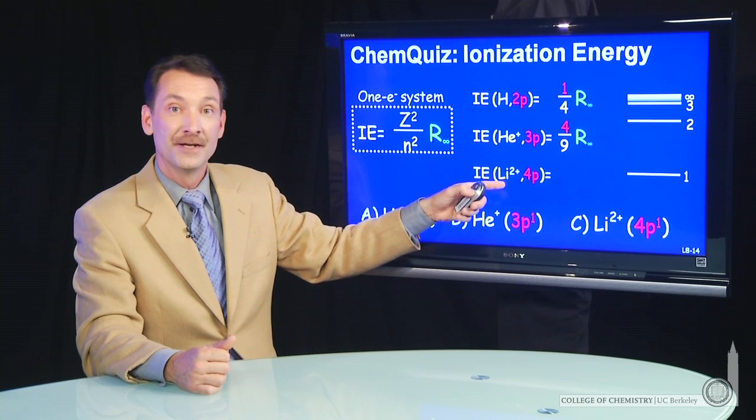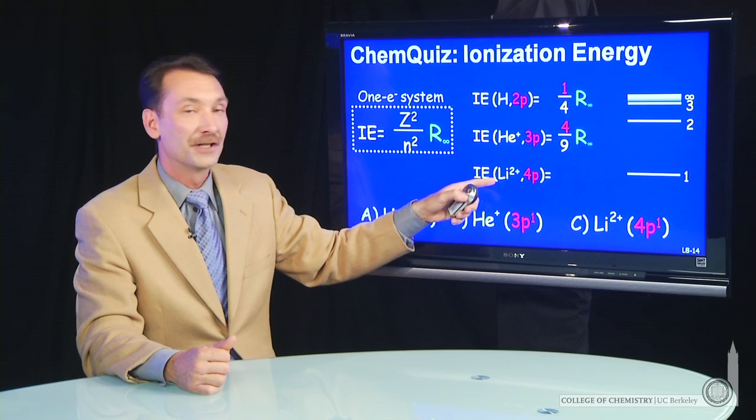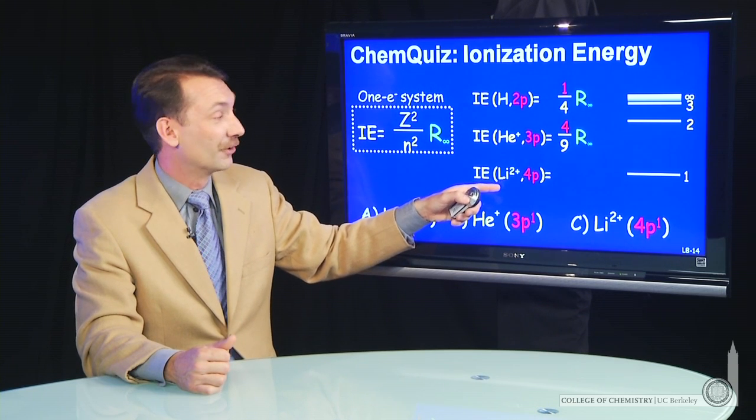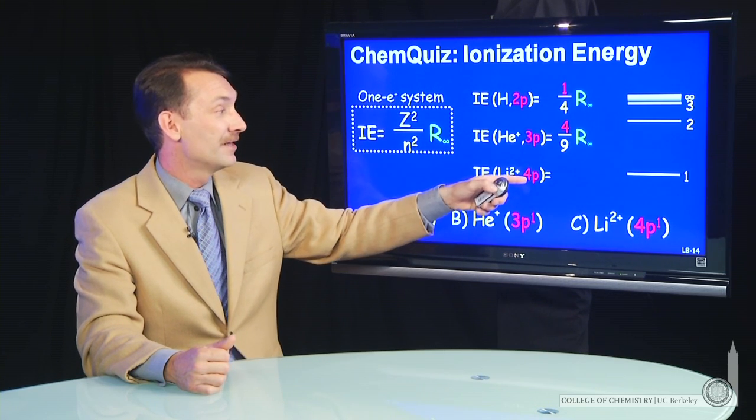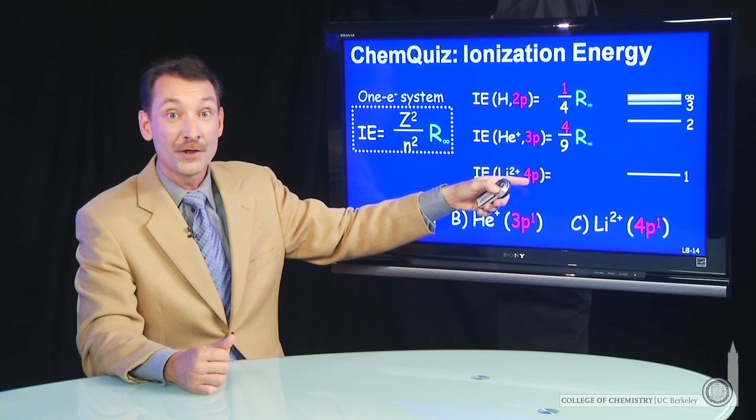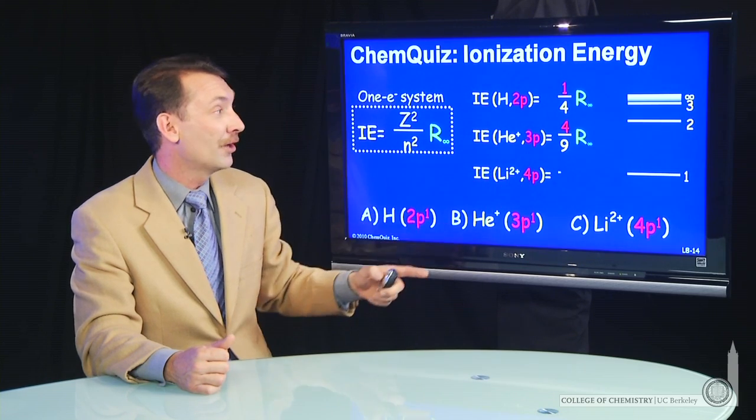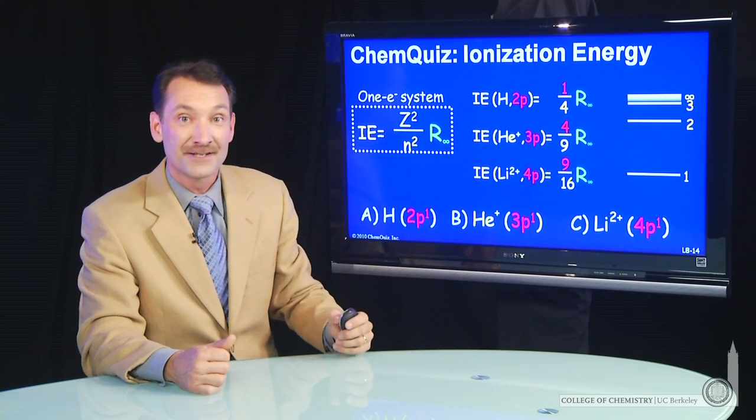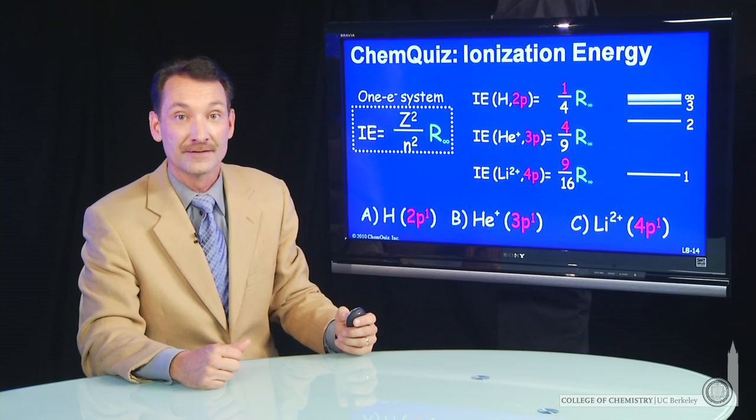And for lithium, now the charge on the nucleus is plus 3 for lithium with its three protons. The electron in the fourth principal quantum level, so n is 4, we have 9 sixteenths of a Rydberg, a little more than half a Rydberg to ionize.